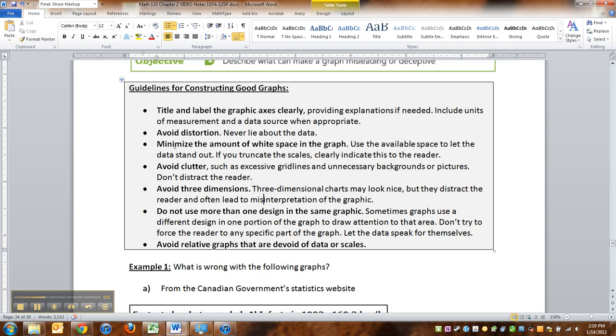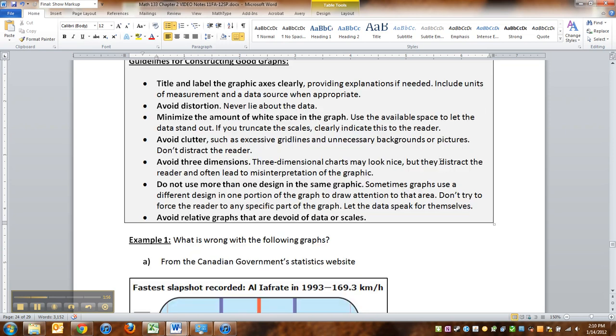You want to minimize the amount of white space in the graph. Use the available space to let the data stand out. If you truncate the scales, clearly indicate this to the reader. Truncating the scales is kind of a controversial thing. You can do it, though. You just have to do it appropriately and make sure that it's obvious that you've truncated the scales. Sometimes it's for a good reason that the scales are truncated, but a lot of the times they're truncated, i.e. cut off, for no good reason other than just to make it easier for somebody to make kind of a distorted point.